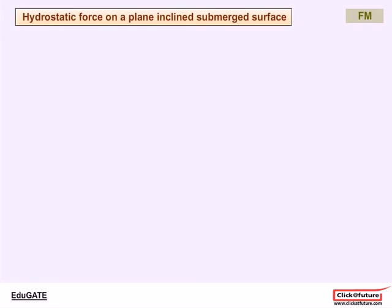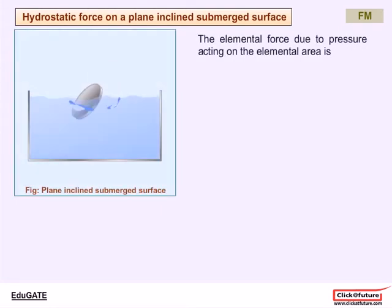The elemental force due to the pressure acting on the elemental area is dF = P dA = σgY sinθ dA. The total force of the liquid on the surface is given by F = ∫dF = ∫σgY sinθ dA = σg sinθ ∫y dA.